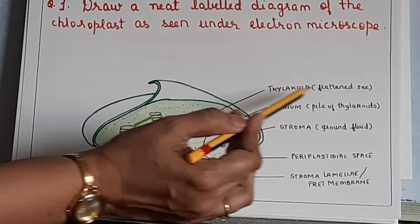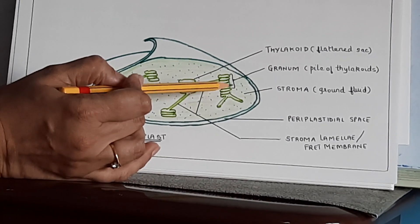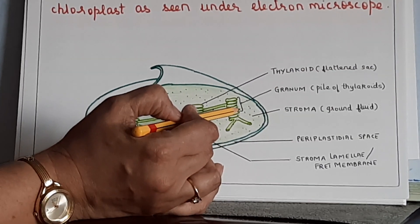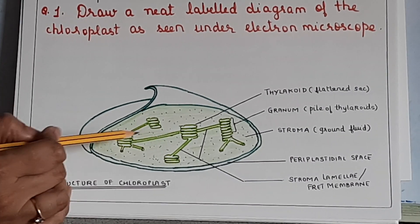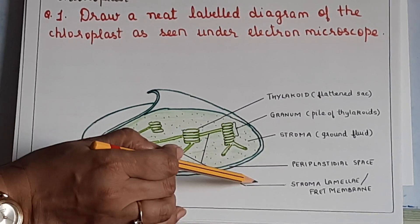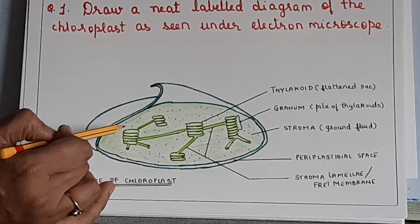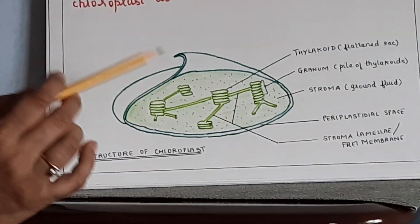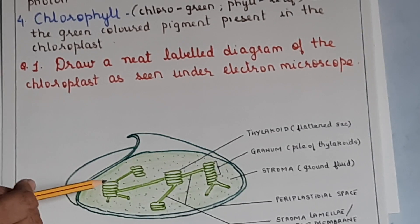A single coin-like structure is called the thylakoid. The entire stack or pile of thylakoids is called the grana — granum for singular, grana for plural. Each granum is connected to others by thread-like structures called stroma lamellae or fret membranes. Chlorophyll is present in the walls of the thylakoid.